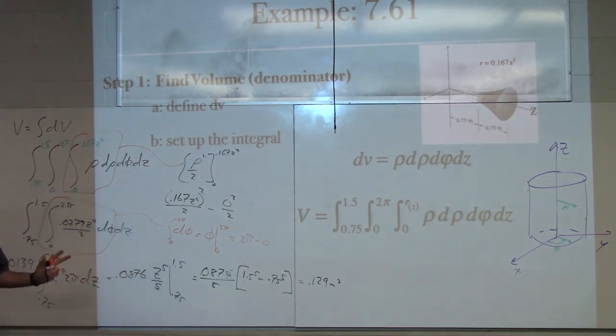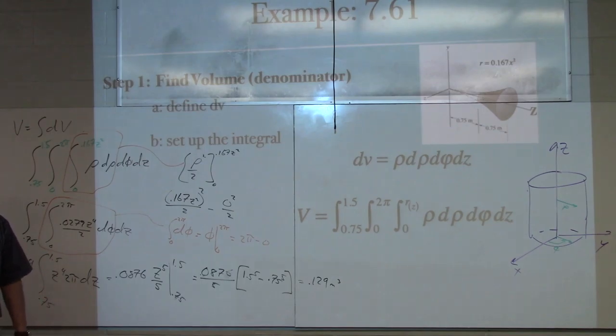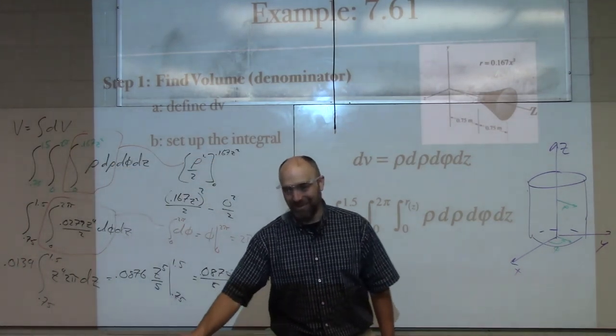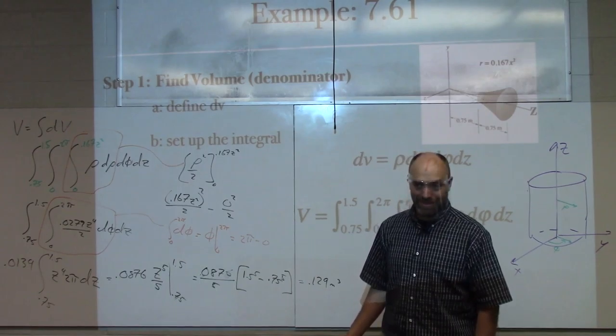0.129. So this would be meters cubed. Okay, everybody happy with that triple integral? Y'all are going to ace cal 4 now. What's that? That's what I'm saying. Yeah. Okay, does this make sense? Any questions?